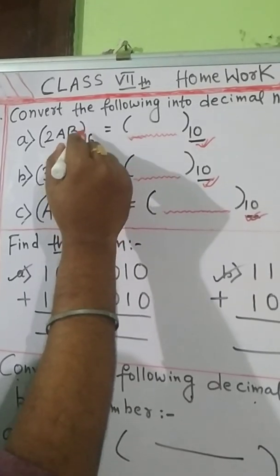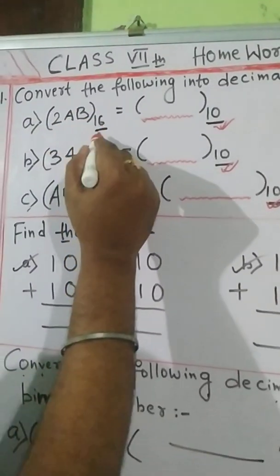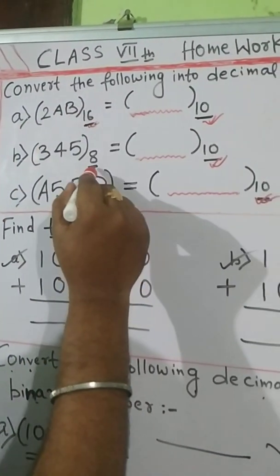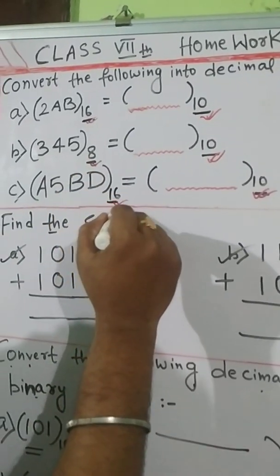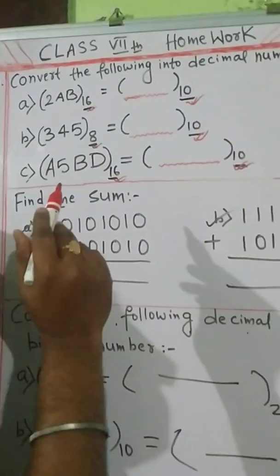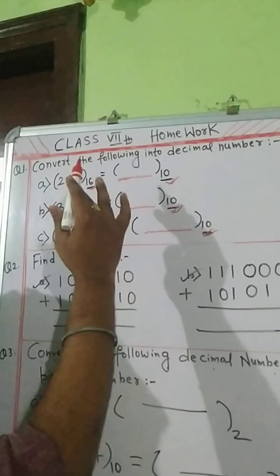The first one is hexadecimal number. 16 is the base. The second one is octal number and the third one is hexadecimal number. So these three questions you have to convert into decimal number.